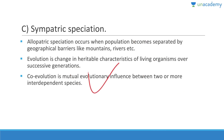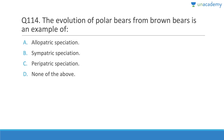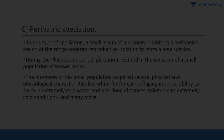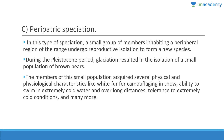The evolution of polar bears from brown bears is a typical example of peripatric speciation — a small group of members inhabiting a peripheral region of the range undergoes reproductive isolation to form a new species. During the Pleistocene period, glaciation isolated a small population of brown bears, and members acquired white fur for camouflage, ability to swim in extremely cold water, and tolerance to cold conditions.